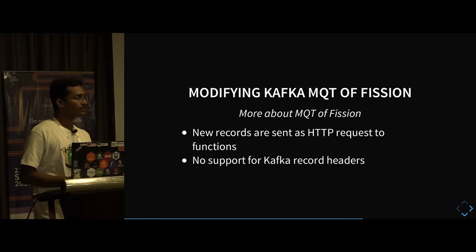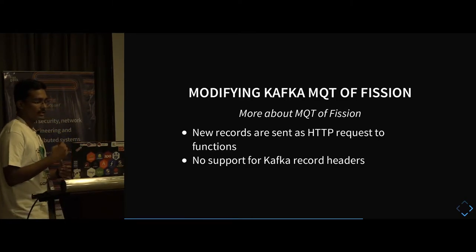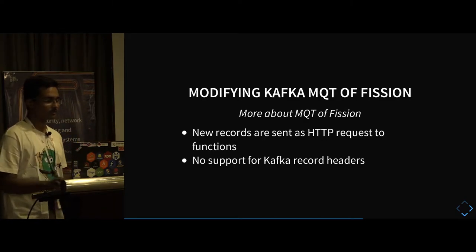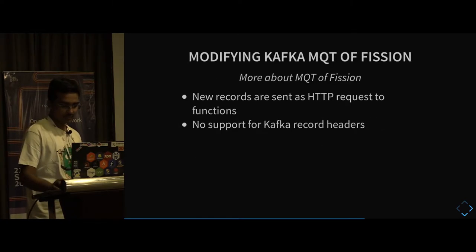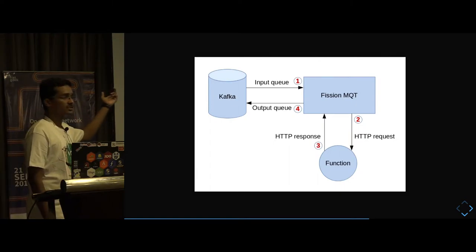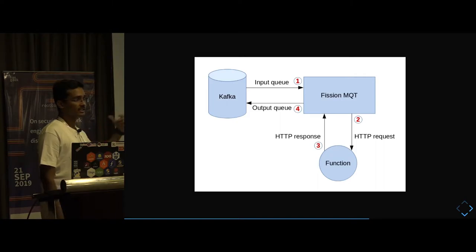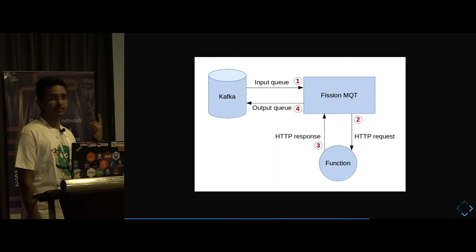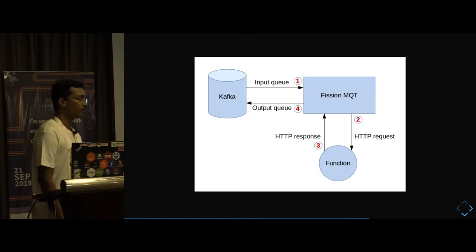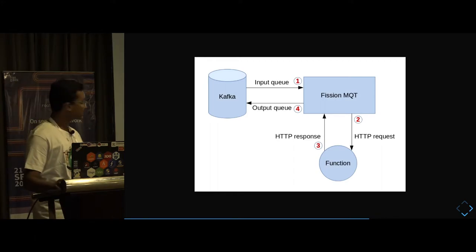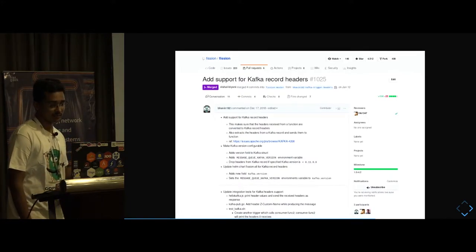There was an issue: when using Fission's message queue trigger, it creates an HTTP request when there is a new message in the input queue but did not have support for Kafka record headers. Kafka supports record headers and you can pass extra headers as part of your Kafka message. When Fission's MQ trigger converts a message to an HTTP request, your function processes it, creates an HTTP response, and that response is translated back to Kafka format — during this translation our headers were lost. Even if our function generated headers and put them in the HTTP response, the message queue trigger was not passing them along. This was the change I made in Fission's Kafka message queue trigger. Now Fission supports this, so any HTTP header in the response will be converted to a Kafka record header.